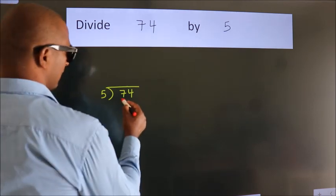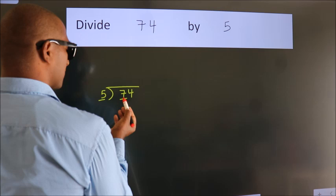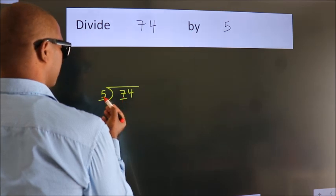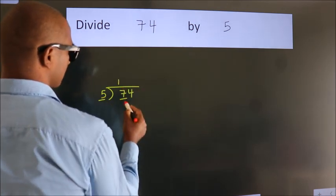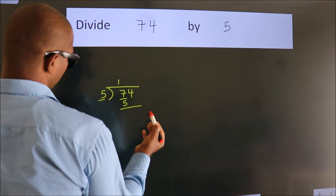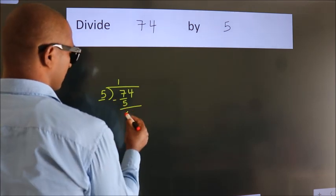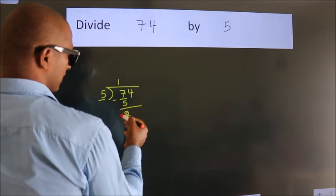Next, here we have 7, here 5. A number close to 7 in the 5 table is 5 once, which is 5. Now we should subtract, we get 2.